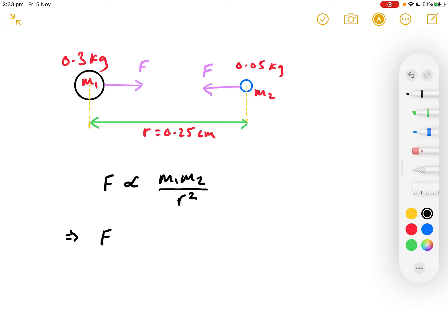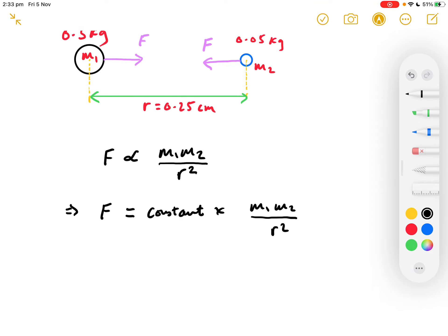Now, in maths, if one quantity is directly proportional to some other quantity, then we can make the relationship into an equation by bringing in the constant of proportionality. So, there's some constant such that this gravitationally attractive force F equals that constant times M1, M2 over R squared.